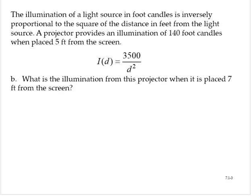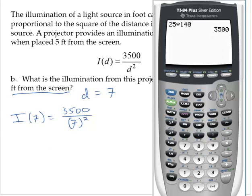What is the illumination from this projector when it is placed 7 feet from the screen? 7 feet from the screen implies that d is 7. So then I(7) would be 3,500 over 7 squared, which is 71.43 approximately.